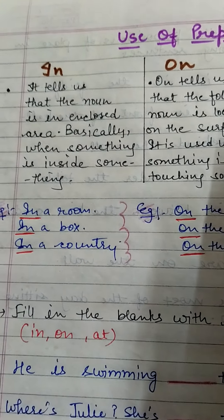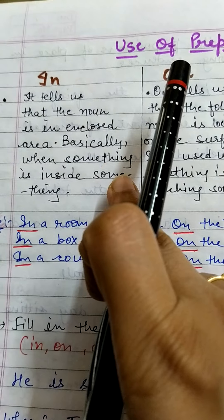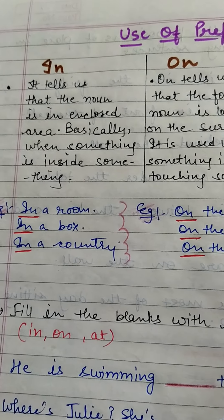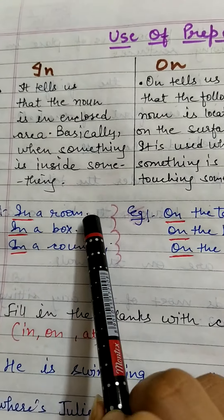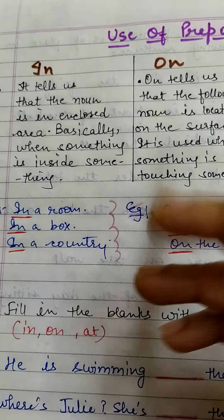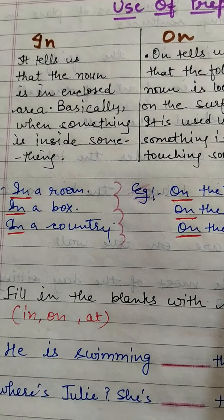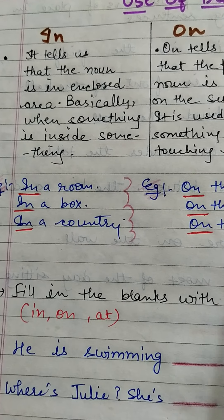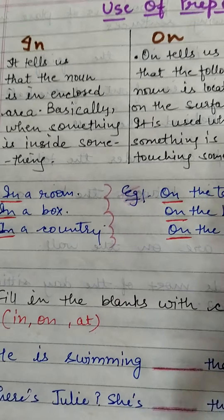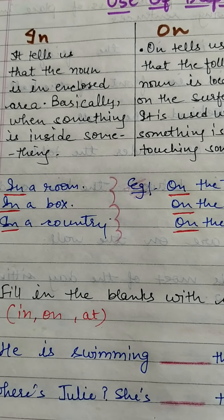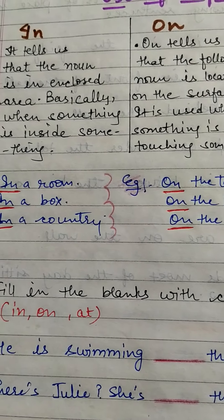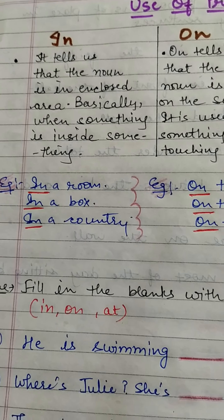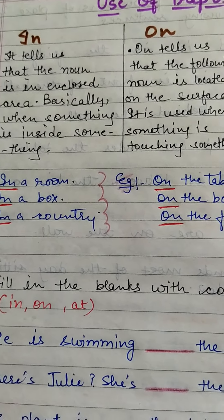Basically, 'in' is used when something is inside something — when something is in a room, in a box, in a country. For example: 'My toys are kept in the room.' 'The ball is in the box.' 'I live in the country.' We always use the preposition 'in' when something is inside something and that space must be enclosed — closed on all sides. It is an enclosed area.